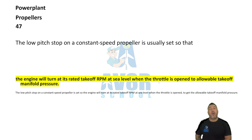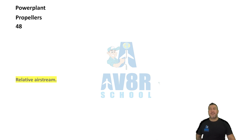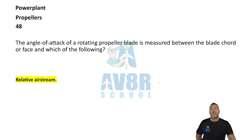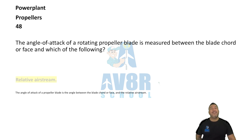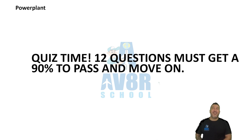Number 48. The angle of attack of a rotating propeller blade is measured between the blade cord or face and the relative airstream. Take a quiz and I'll see you soon.